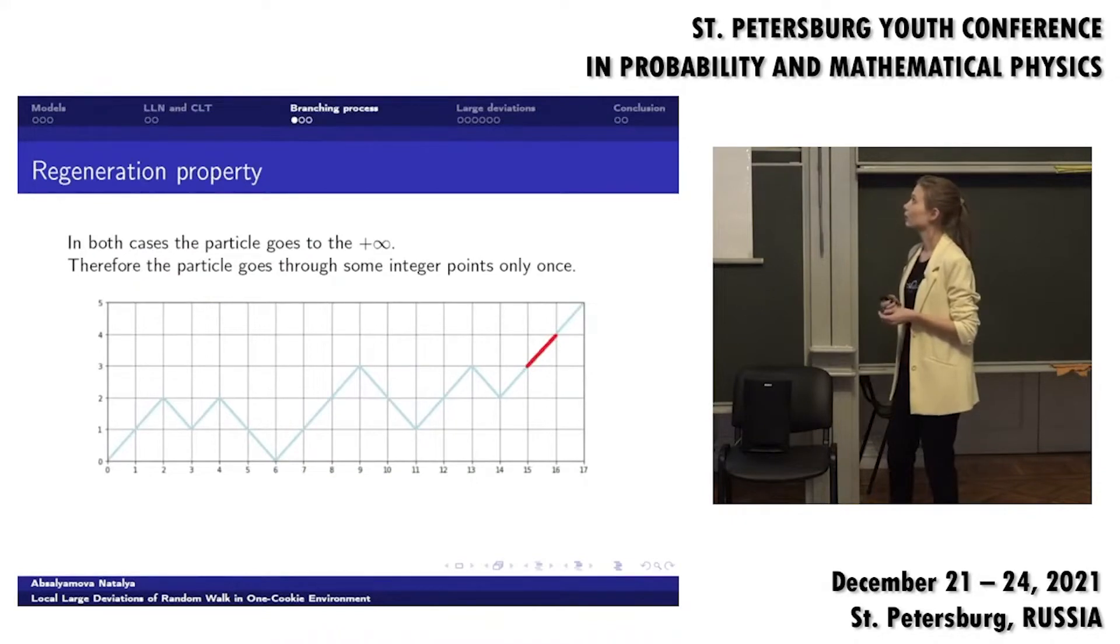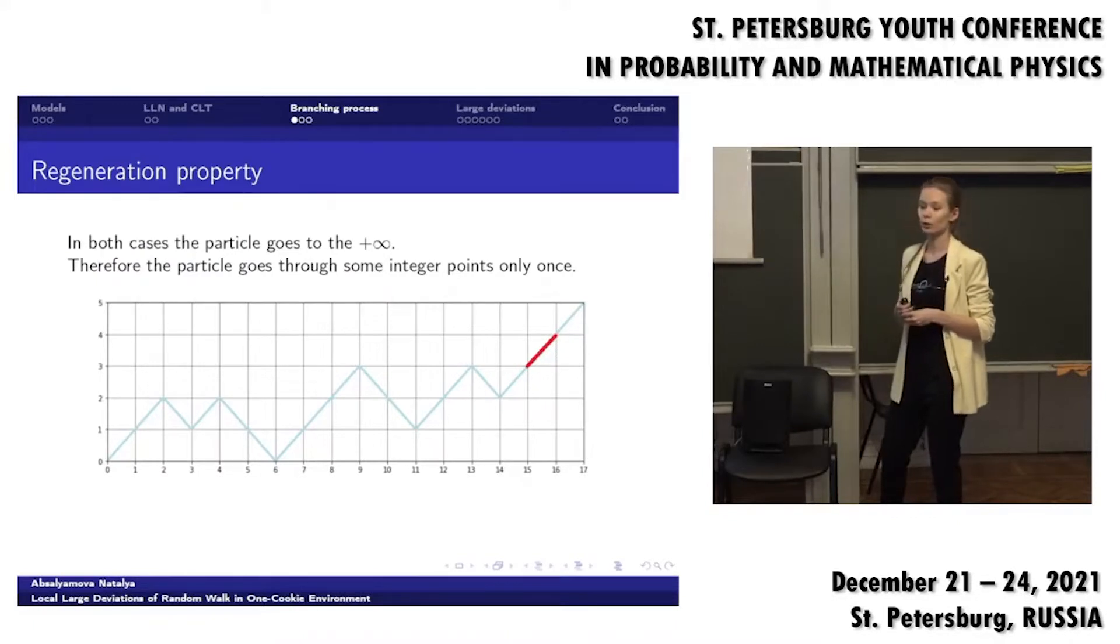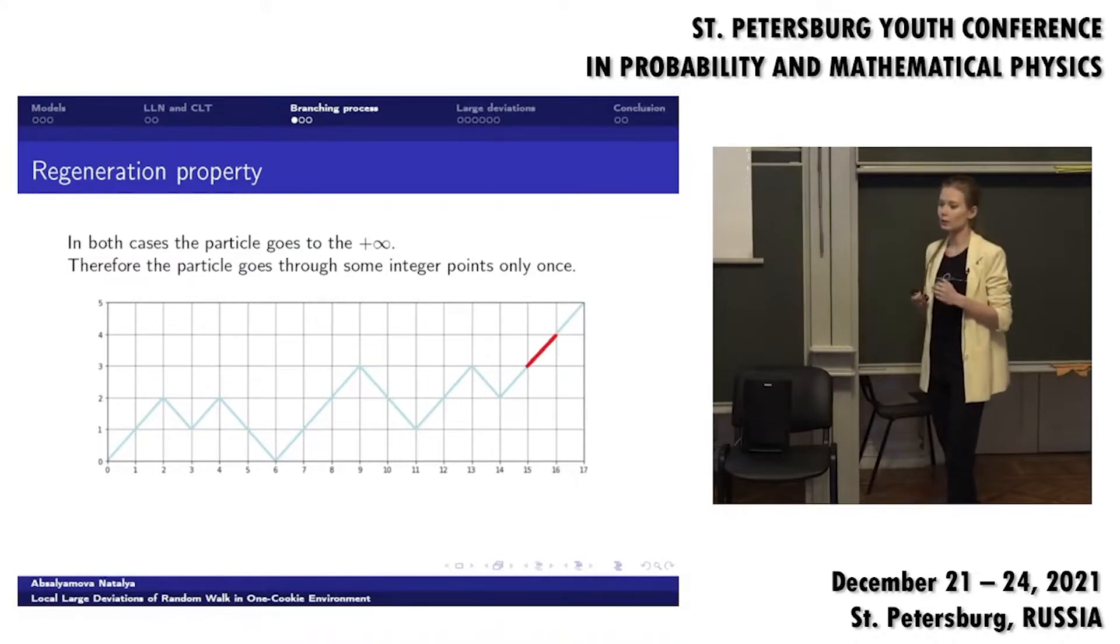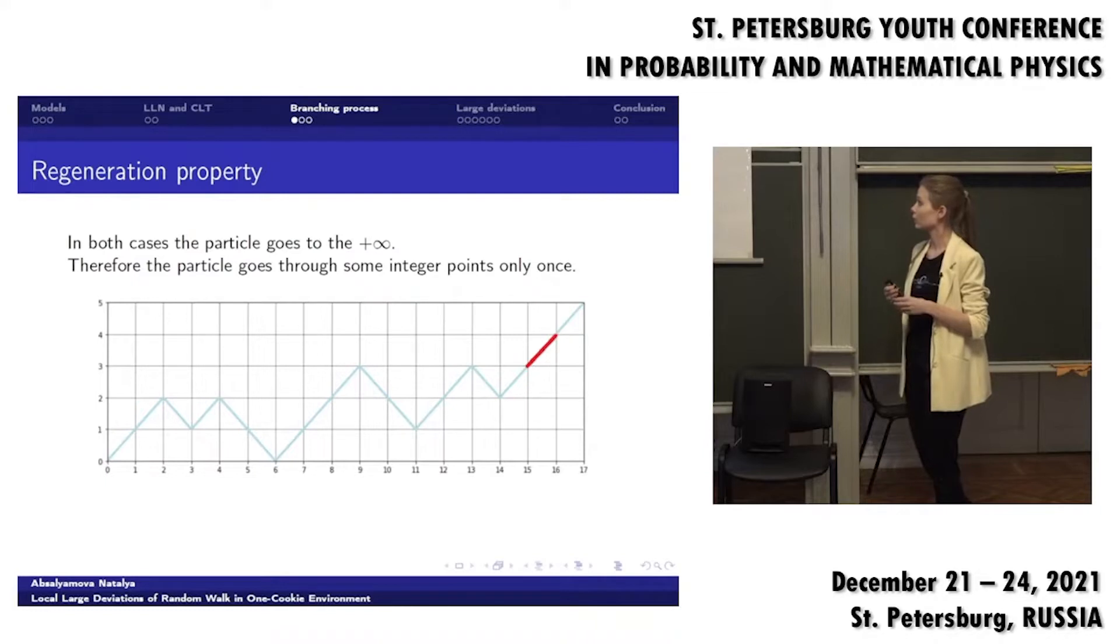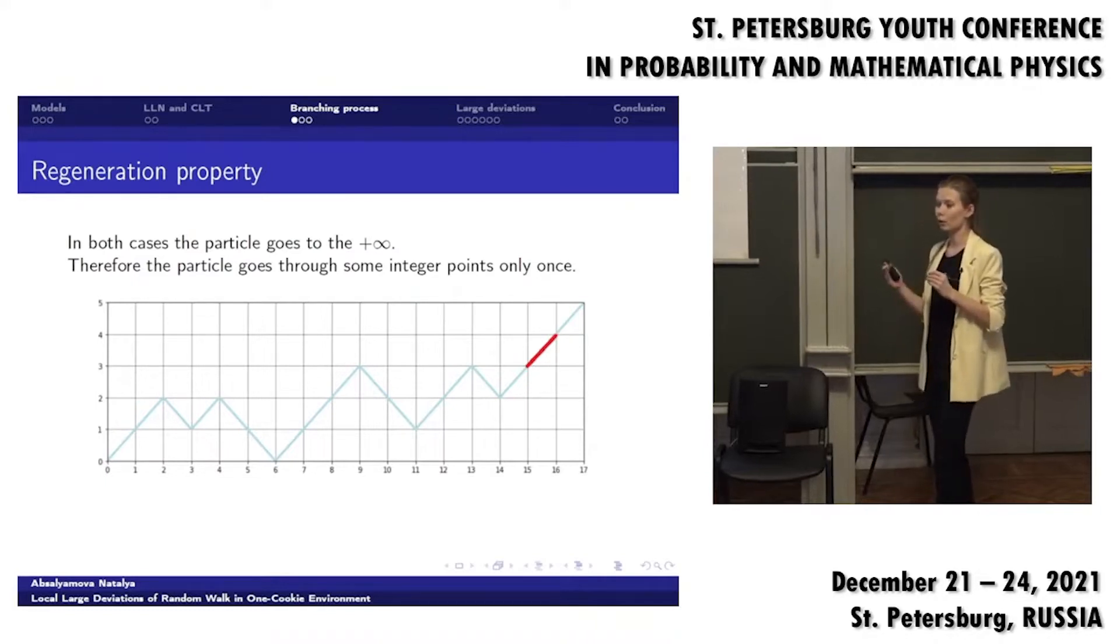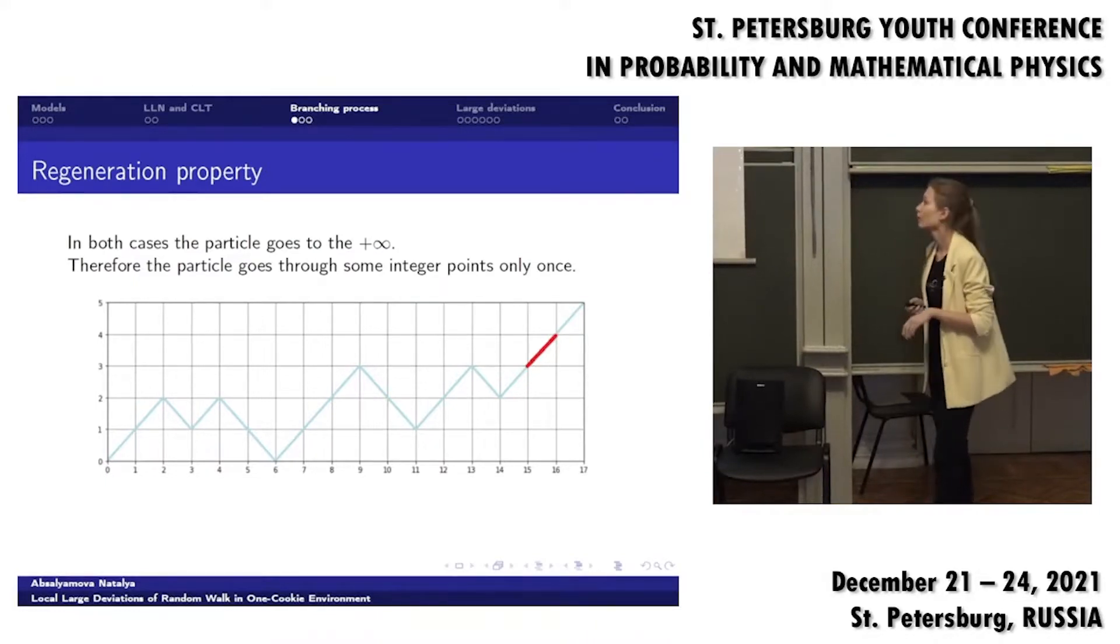And now let's start to talk about branching processes which will help us to construct a formula for large deviations. We know that in both of our cases the particle goes to plus infinity. Therefore there are moments when the particle goes from one level to the next level only once in time. Such moments we will call regeneration moments.